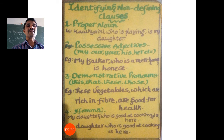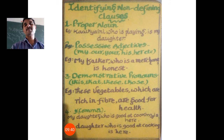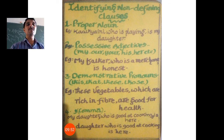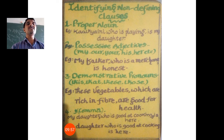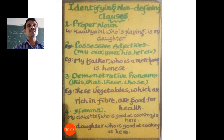The third clue: demonstrative pronouns — this, that, these, those. For example, 'These vegetables, which are rich in fiber, are good for health.' Remove the relative clause 'which are rich in fiber' and read: 'These vegetables are good for health.' That is enough. By adding 'which are rich in fiber,' we give additional information about the antecedent 'these vegetables.' Here 'which' is the relative pronoun. Note: who, whom, and whose are used for persons; which is used for things.